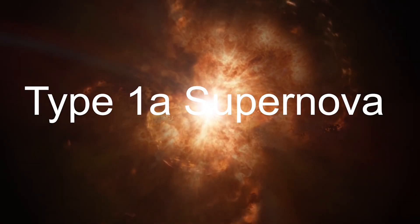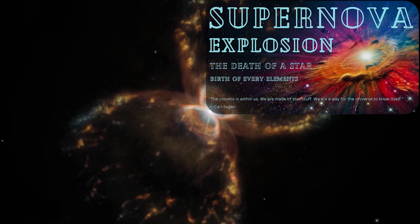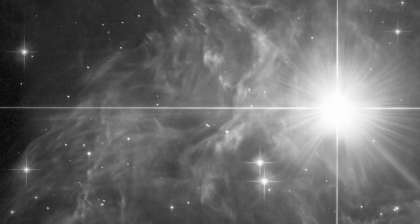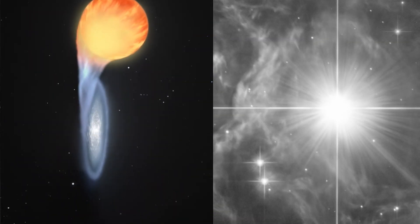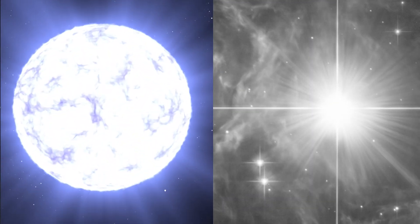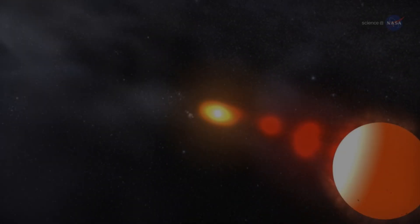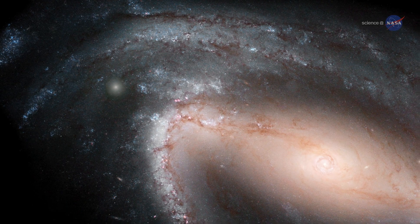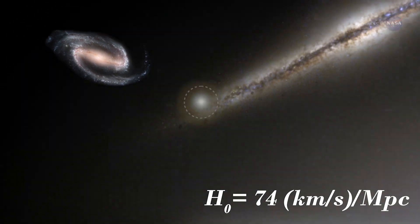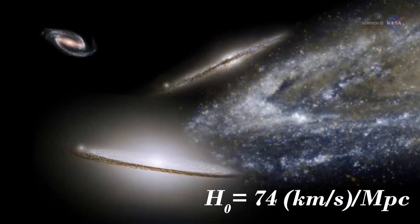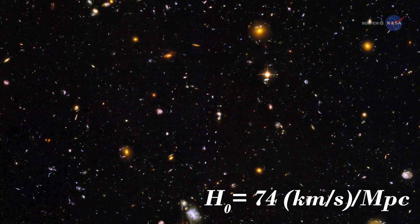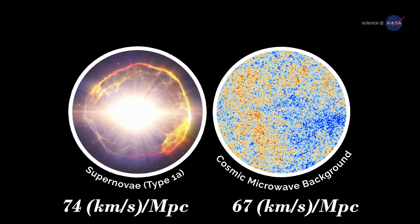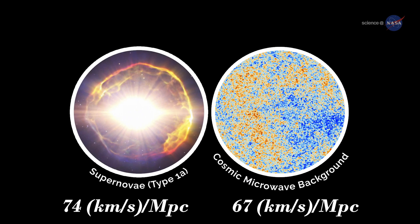To know more about supernova, I highly request you to watch this video. On the other hand, Cepheid variable stars always blink at a same luminosity. So scientists consider these two incidents as standard candles. With the help of these standard candles, when they calculate the Hubble constant, it came out to be 74 kilometers per second per megaparsec. So there is a huge gap between this Hubble constant measured in two different ways: 67 and 74 kilometers per second per megaparsec.